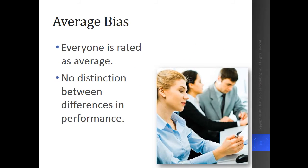And then there's the average performance bias — that manager who just wants to get it done, where everyone is rated as average. There's no distinction between different levels of performance. This is a middle-of-the-road bias and doesn't allow people to see what their strengths and weaknesses are as they go through performance reviews.